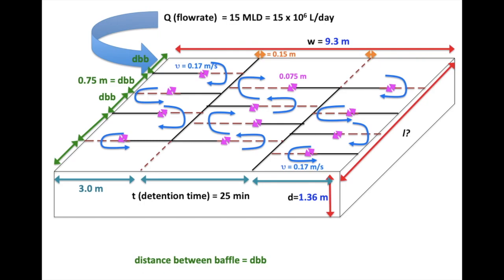So, should we know the distance for water to travel in a channel, then we should be able to find number of channels in the flocculation tank.